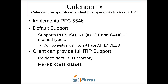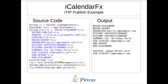iCalendarFX can process iCalendar Transport Independent Interoperability Protocol messages, also known as ITIP messages, as defined in RFC 5546. Built-in support is provided for publish, request, and cancel method types, as long as there are no attendees. Support for other method types can be added by the client by replacing the default ITIPFactory and providing new classes to process the method types. In this example, I process a publish message. I create a main vCalendar which is empty. The publish message is represented by a string and processed by calling the processITIPMessage method, which also returns a string list containing a log of what occurred. The main vCalendar now contains the vEvent from the publish message, and the log shows the operation was successful.